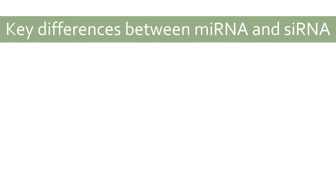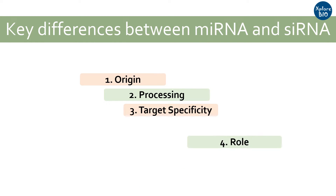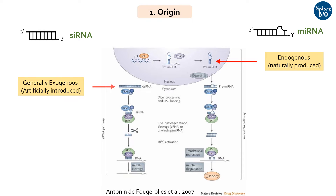Now let's see what makes siRNA and miRNA different from each other. We will see the differences based on their origin, processing, specificity for target mRNA, and role in cellular processes. miRNA is generally endogenous in origin — that is, it is naturally produced in an organism. On the other hand, siRNA can be endogenous but is generally exogenous in origin, meaning siRNA may be naturally produced in a cell but is mostly artificially introduced from outside.